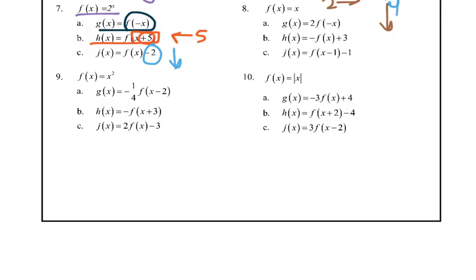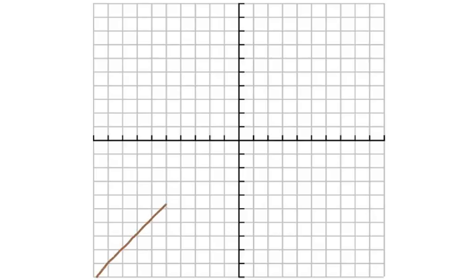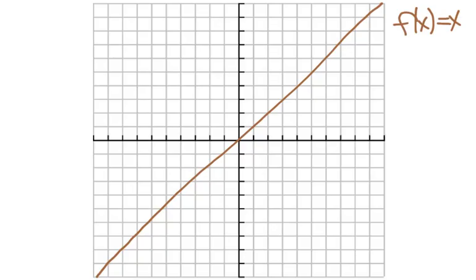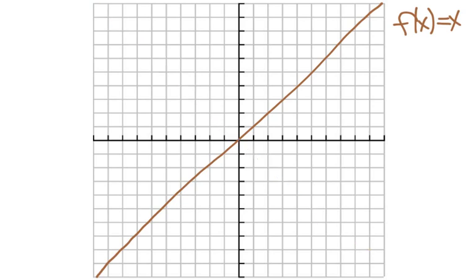Now we're back to f(x) = x. Here's my parent graph. We're going to vertically stretch and flip over the y — flipping over the y would make it look that way, and vertically stretching it by 2 makes it go at a steeper slant. That's all you have to do on that one.